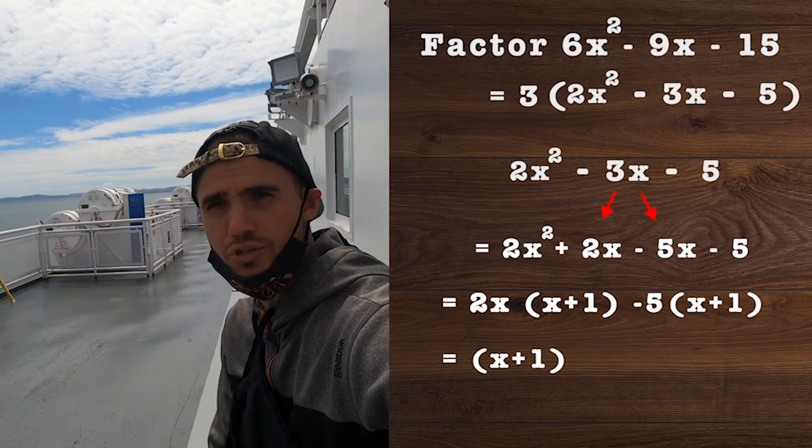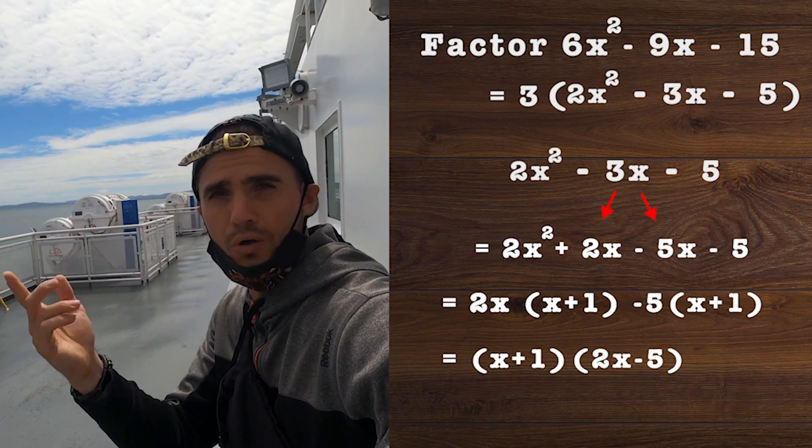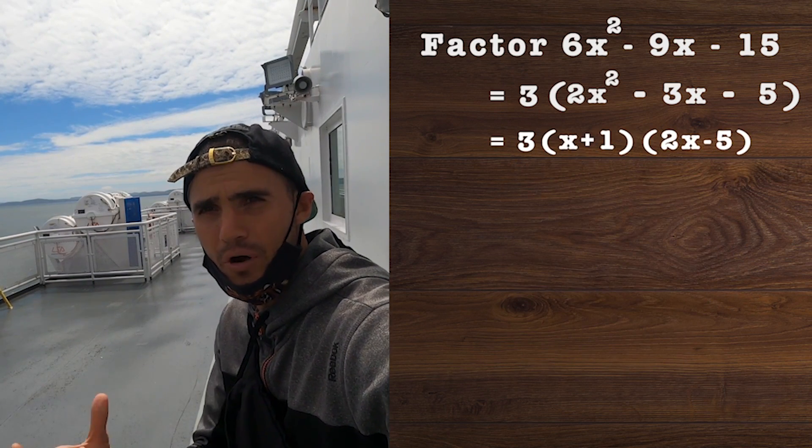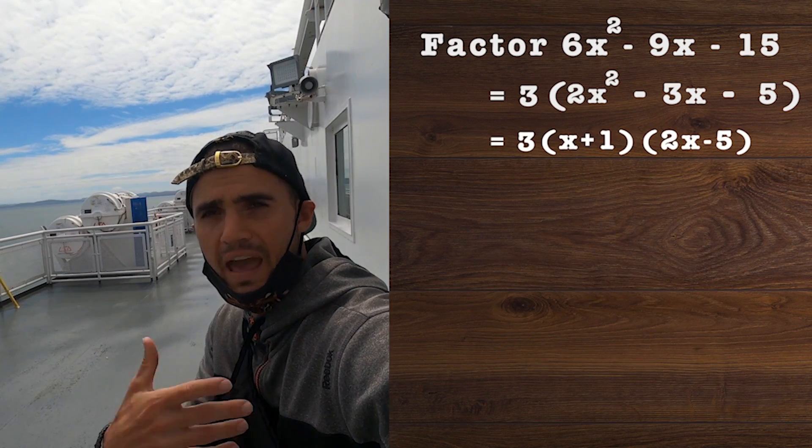Now we can take out that same bracket, that binomial common factor of x + 1 from both terms, and we'd be left with 2x - 5. But remember, for the actual overall question, we still have that 3 in front, so we end up with 3(x + 1)(2x - 5).